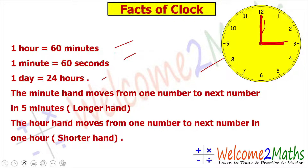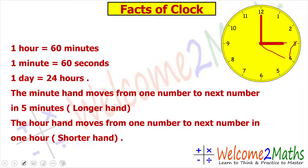When the minute hand is at 12 and it moves to the next number, which is 1, it will take 5 minutes only. So 12 to 1 takes 5 minutes. The shorter hand is the hour hand; here it is at 3. When the hour hand moves from one number to the next — say from 3 to 4 — it will take 1 hour. This is the key information I wanted to share.